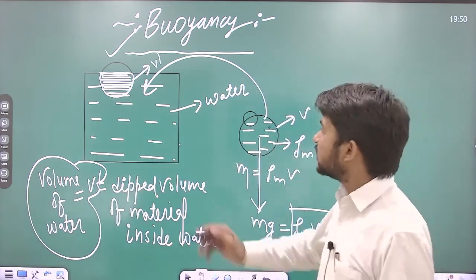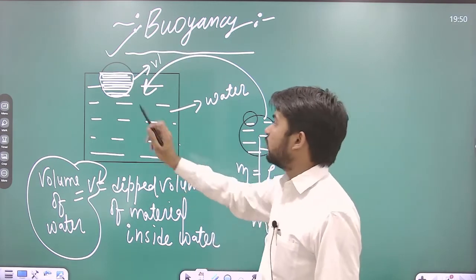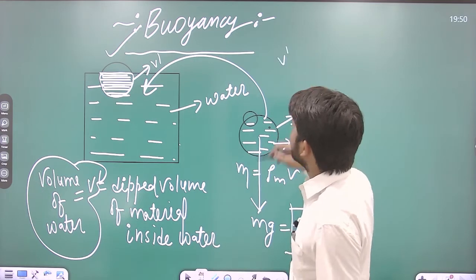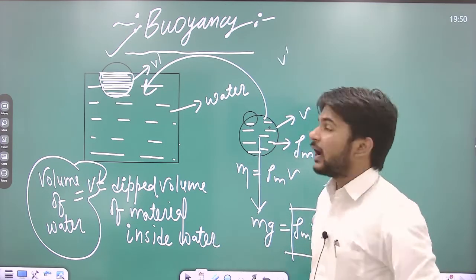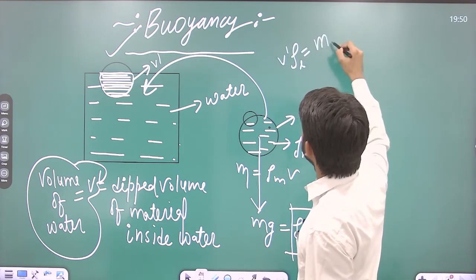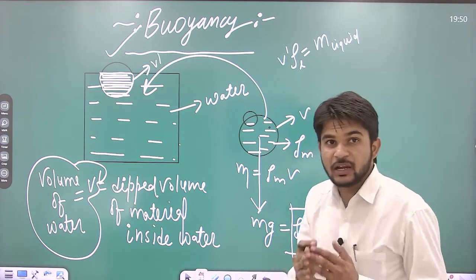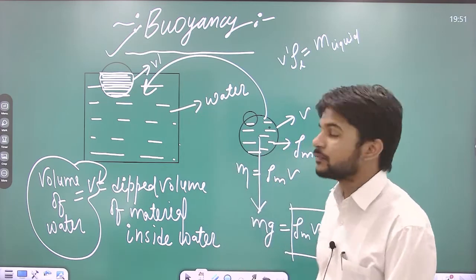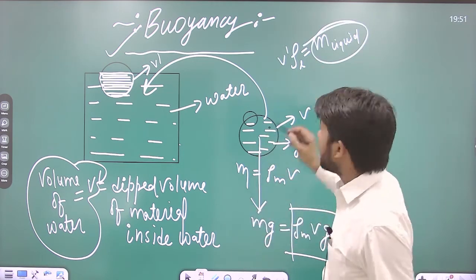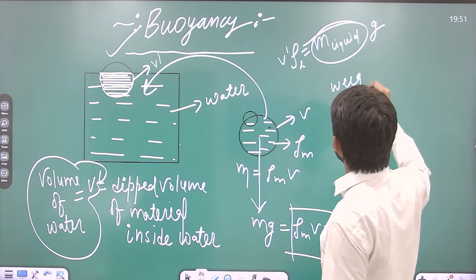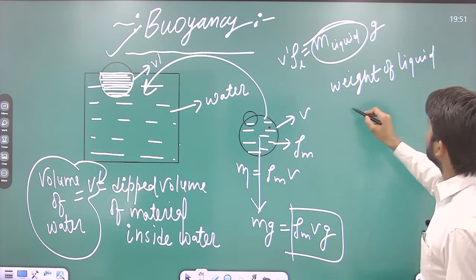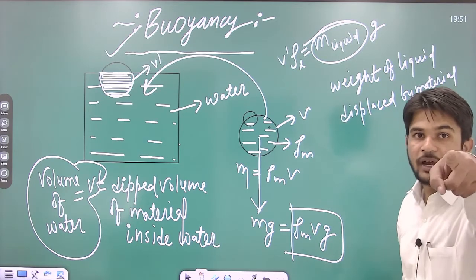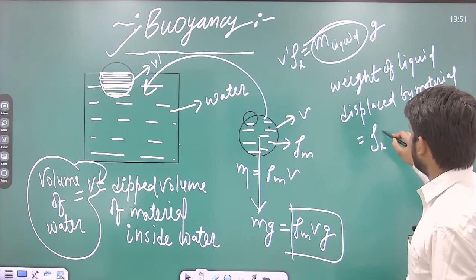When we sink the object into the liquid, V dash volume is submerged, so that amount of water is displaced — and that displaced volume is V dash. If we multiply this V dash with the density of the liquid, we get the mass of the liquid displaced by this body. And if we multiply that mass by g, we get the weight of the liquid displaced — which is ρL × V dash × g.